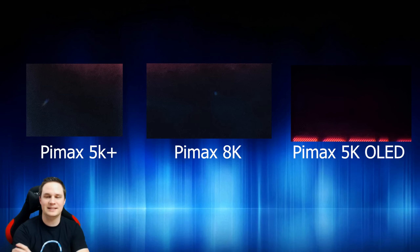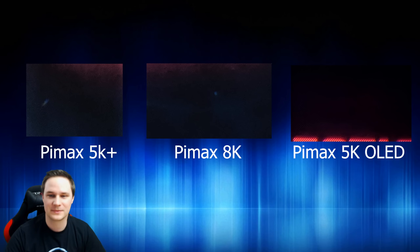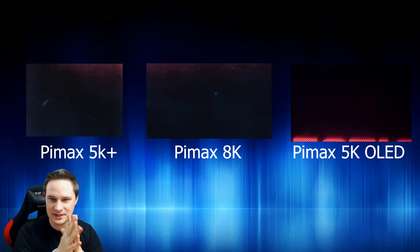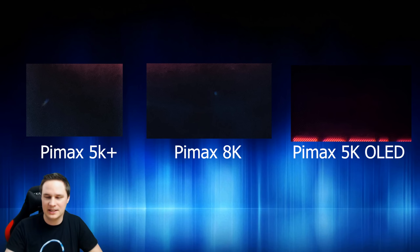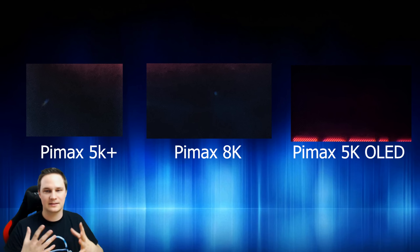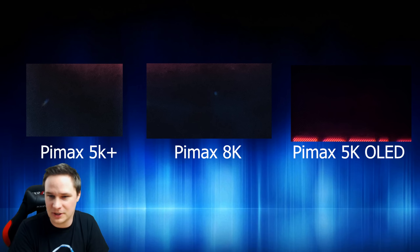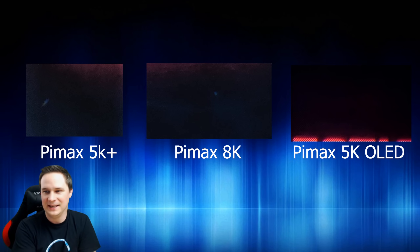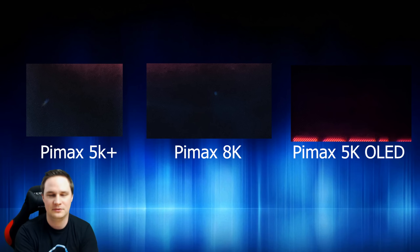Now the black values — this is a huge advantage of the Pimax 5K OLED. All three scenes are from Beat Saber in a dark scene, so what you see should be deep black. On the 5K Plus, it's not black — it looks gray or bright gray. On the 8K in the middle, it's also not black. This is a very big disadvantage of the LCD panels in the 5K Plus and 8K. But look at the third picture — the Pimax 5K OLED — this is black as it should be. No bright gray, just black. That is a huge advantage of the OLED.